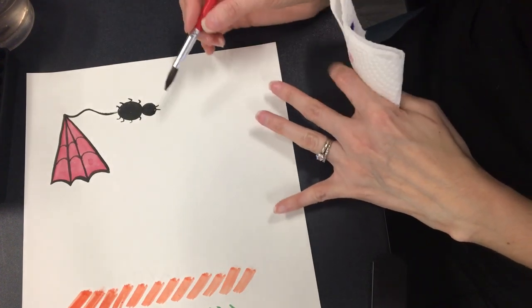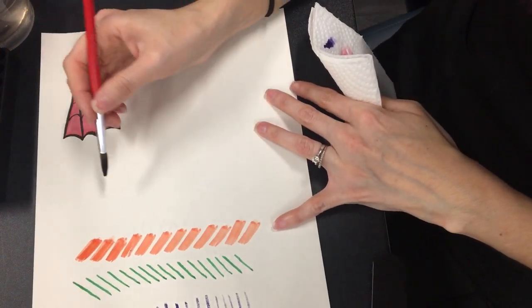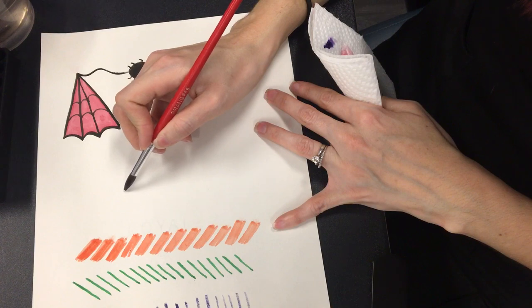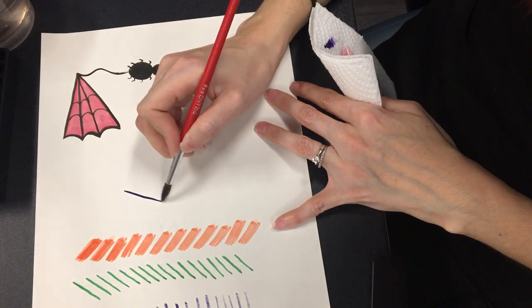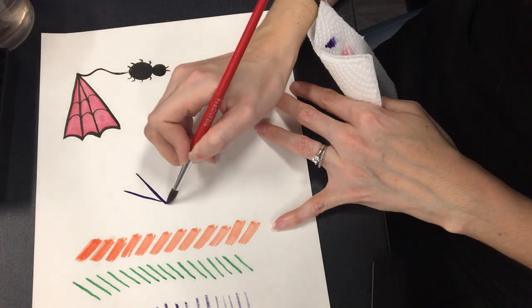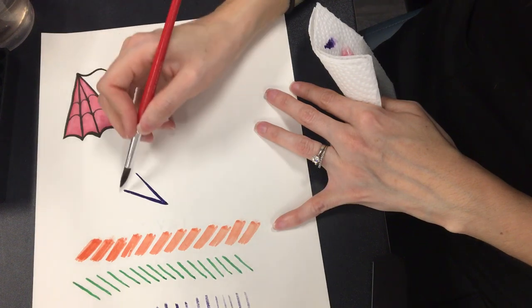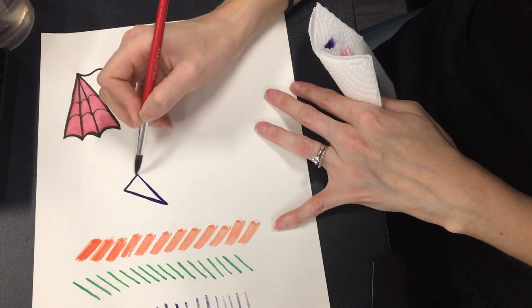So what you're going to do is you're going to create—I'm gonna scoot mine over this way—you're gonna create a triangle, an acute triangle. Acute means somewhat thin. Okay, here's my triangle. I'm using purple but on the screen it looks black.